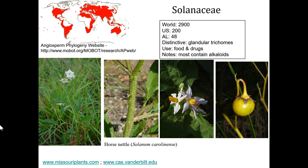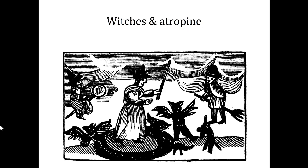Many Solanaceae have glandular trichomes — small trichomes with glands that release chemicals through their surface. Importantly, many members of the Solanaceae contain alkaloid compounds that are easily absorbed through the skin when present on the surface of these trichomes. This can happen when these compounds are applied to areas of the body with a lot of vascularization close to the surface.